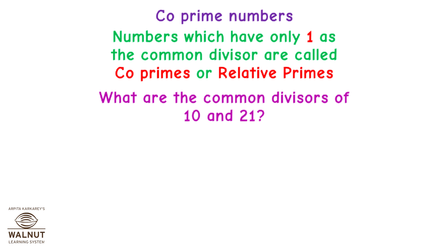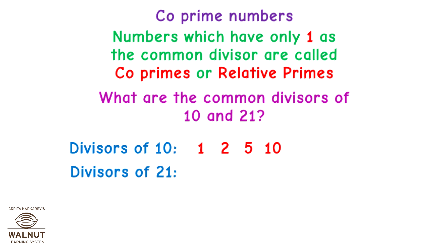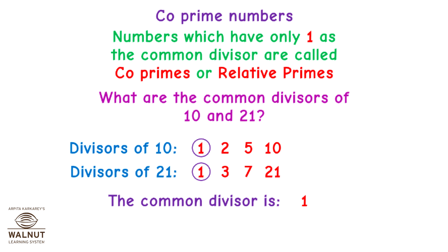What are the common divisors of 10 and 21? Divisors of 10 are 1, 2, 5 and 10. Divisors of 21 are 1, 3, 7 and 21. The common divisor is 1.